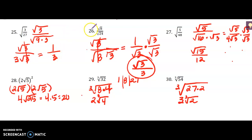For number 26, I simplified the denominator to say the square root of 8 times the square root of 3. These canceled, so I now have 1 over the square root of 3. I need to rationalize my denominator to get rid of that radical, so the final answer is the square root of 3 over 3.